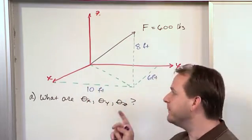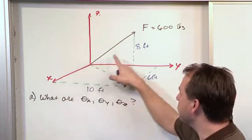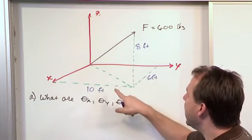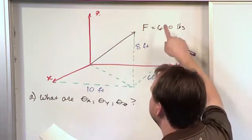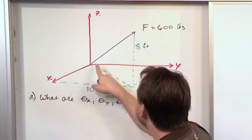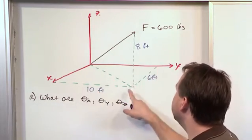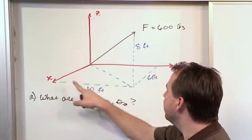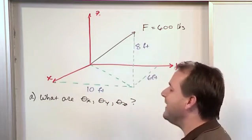But what we have done is kind of draw the three-dimensional representation of this vector. And if it were a length vector, then we would say that the x component, which would be this component, would be 6 feet. This component would be 10 feet. And the height of the guy would be 8 feet.